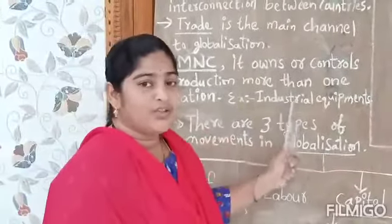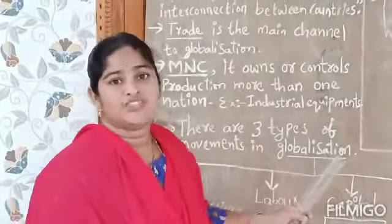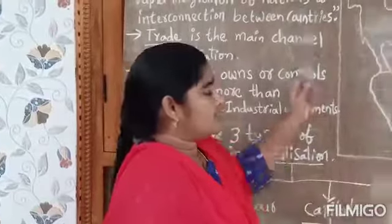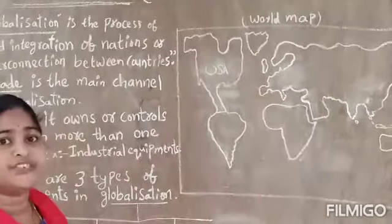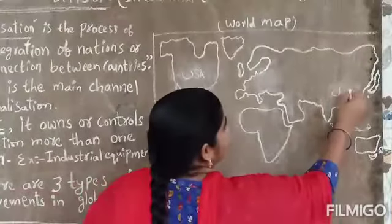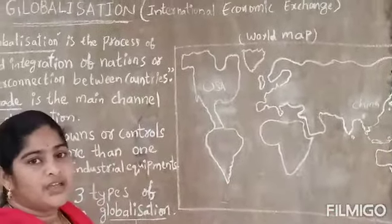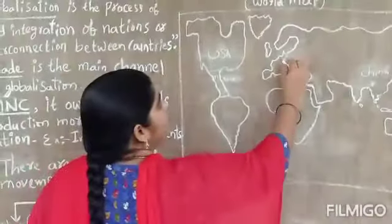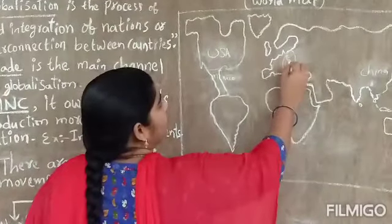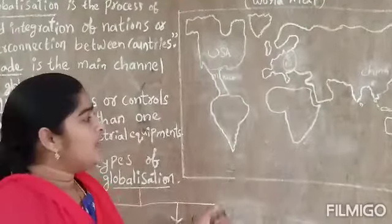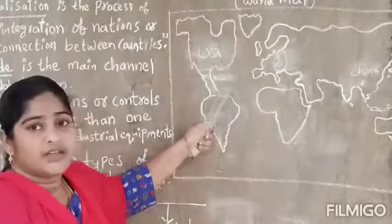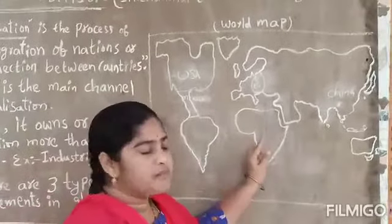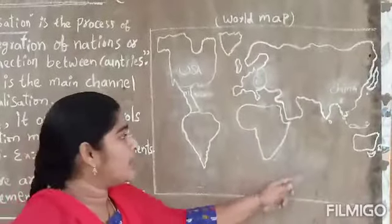I will explain with an example. Suppose a large multinational company is going to produce industrial equipment. It selects US research centers for the design. After that, it selects China for the manufacturing of components. These components will be shipped to Mexico and Eastern European countries for the assembly. Here, the goods will be finished, and from here, it sells the produced goods all over the world. Meanwhile, the customer care of this company will be carried out through a call center located in India.